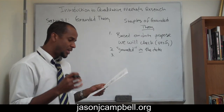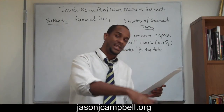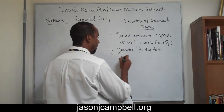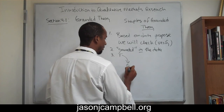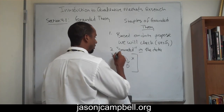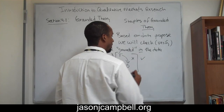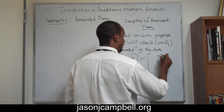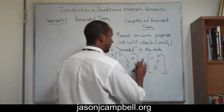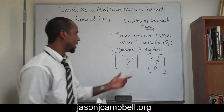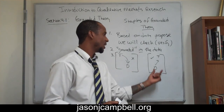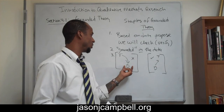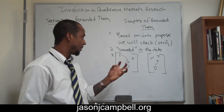Number three: theory isn't applied to the data — the data generates the theory. This is not a grounded theory model where theory is applied to data. What we're seeing is that we have the data, and the data is used to generate or discover the theory. Grounded theory is this: the data is used to generate the theory, not the theory being applied to or shaping the data.